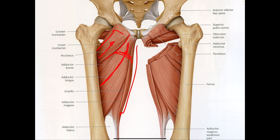So if you want to remember the names: pectineus, adductor longus, gracilis. Those are the three.